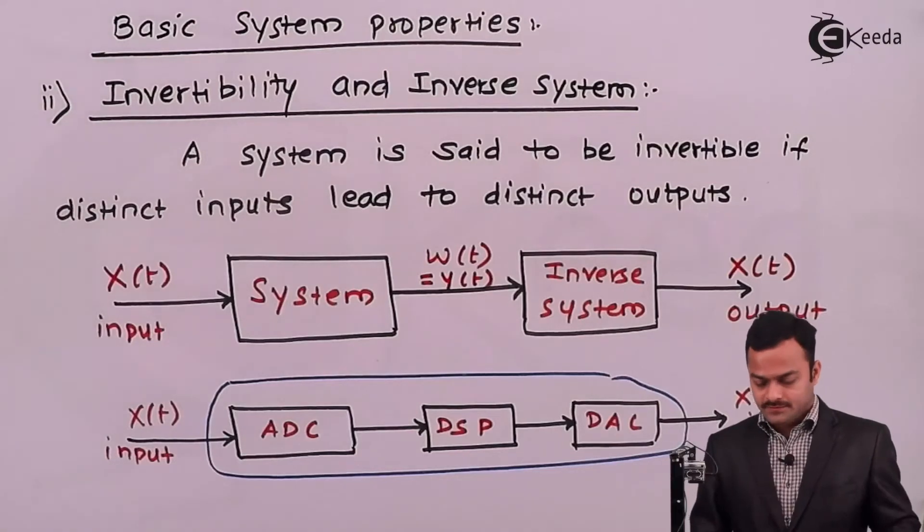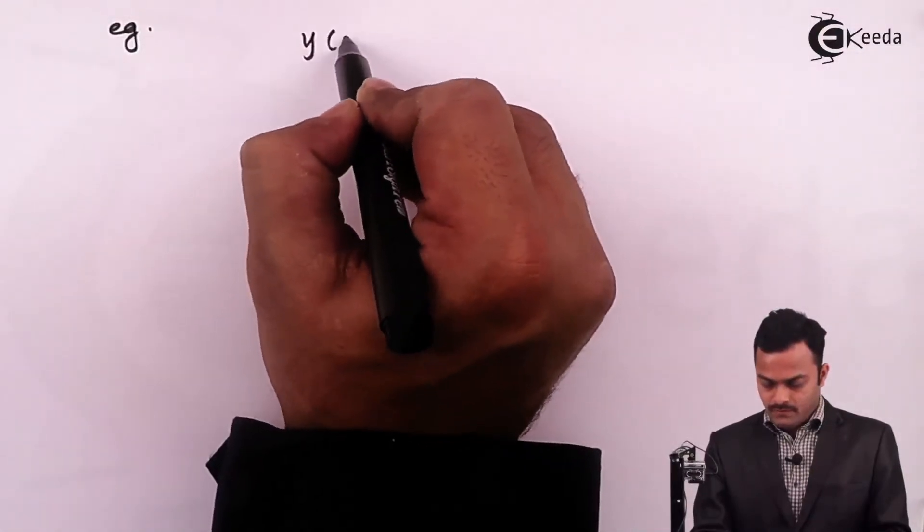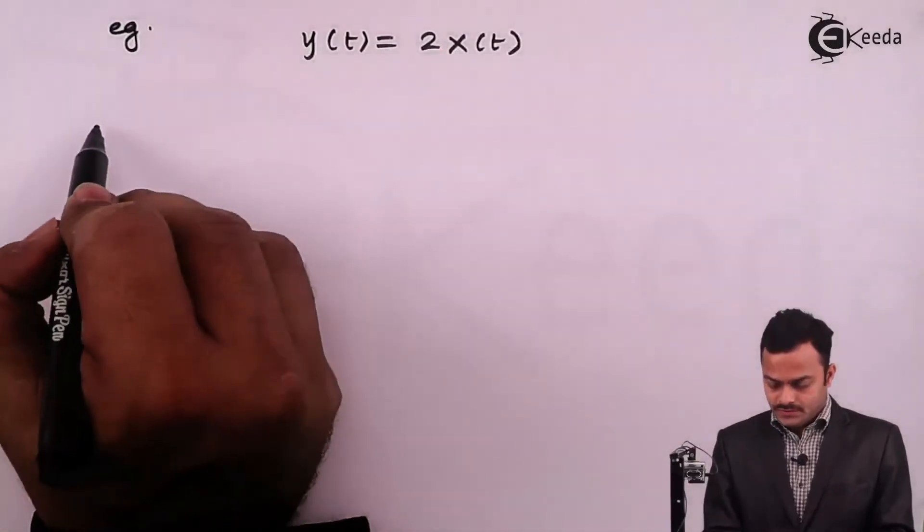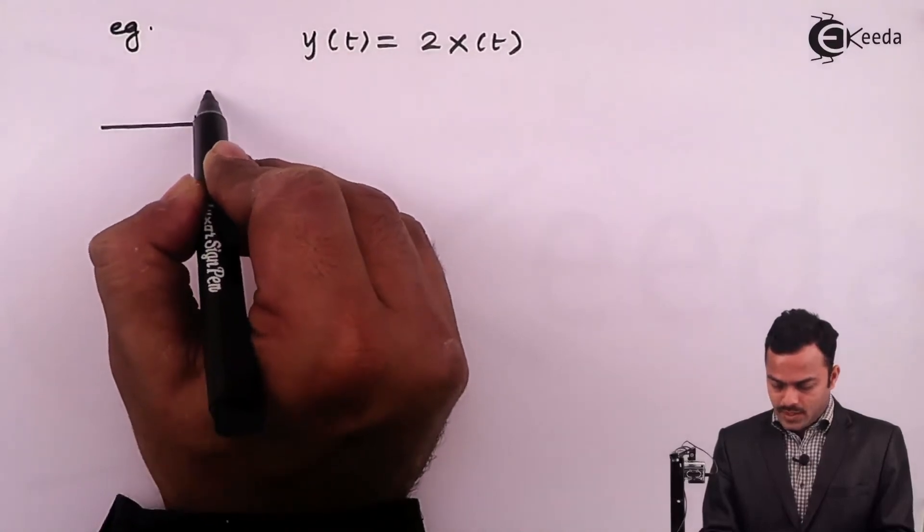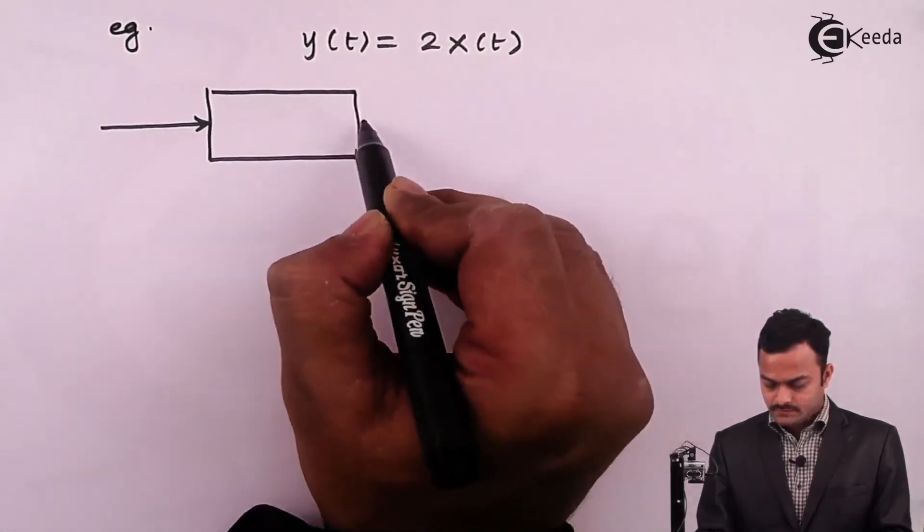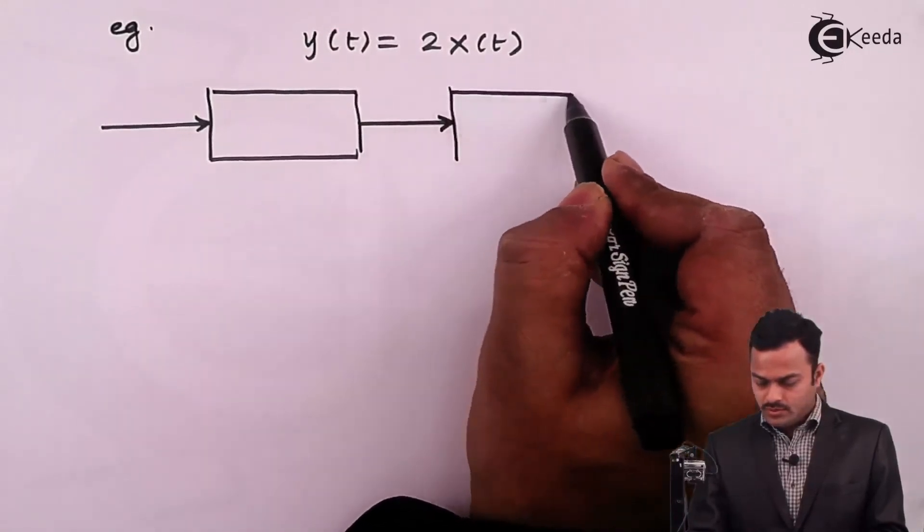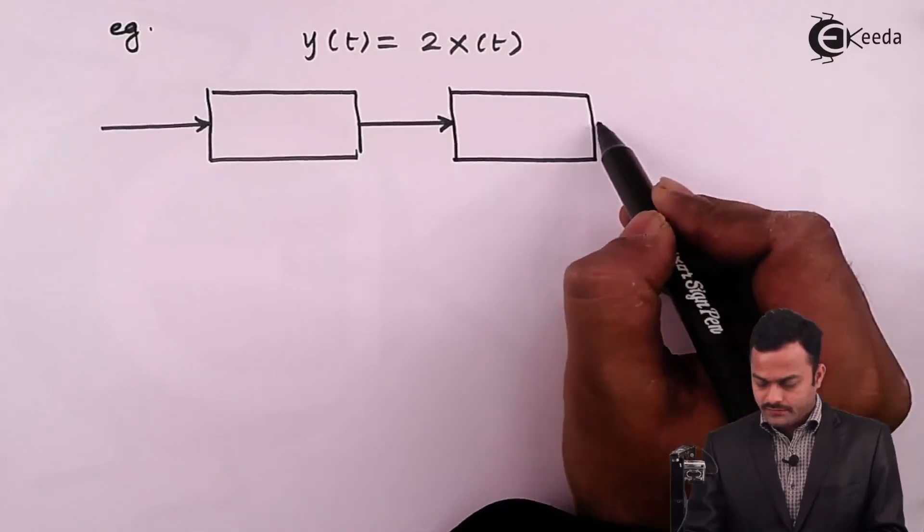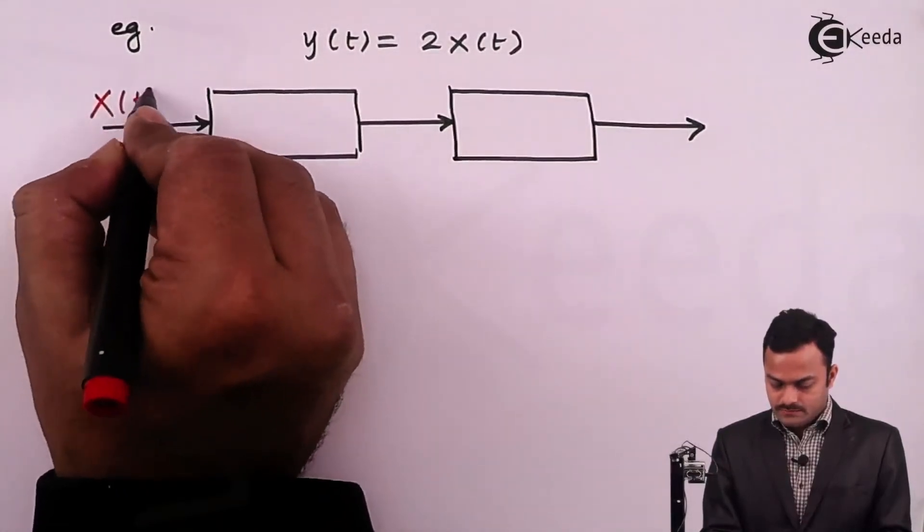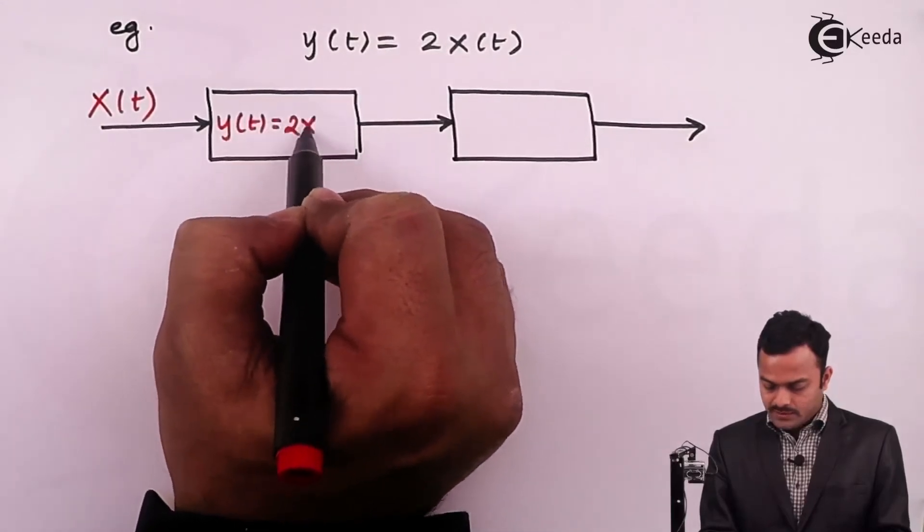Let's see one more example. Let's mathematically consider an example of y of t equals 2x of t. Now x of t is the signal passed through a system to get y of t. That y of t needs to be passed through an inverse system in order to reproduce x of t. I repeat: x of t is the input signal, passed through the system. So what is the system going to do? The system is simply going to multiply the input signal.